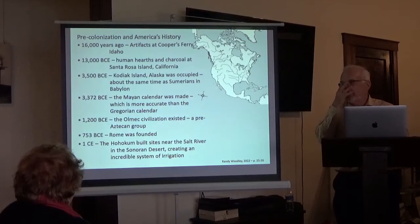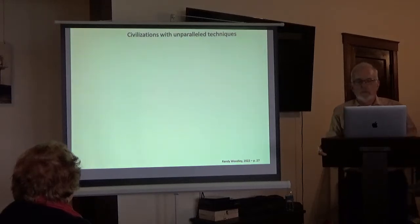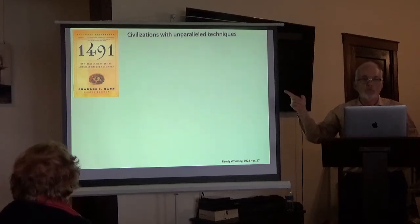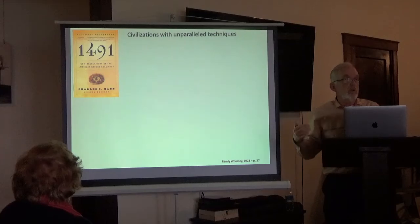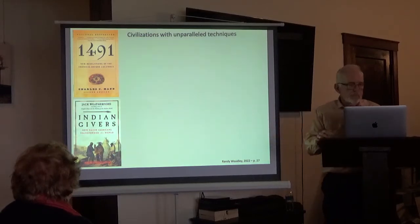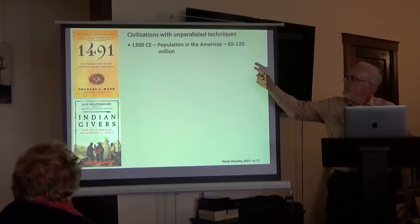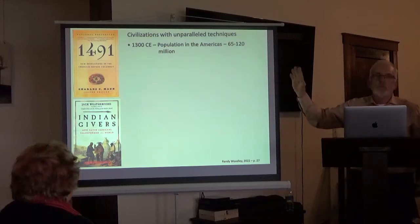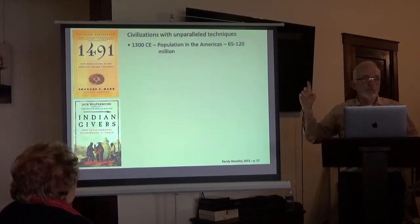In the year 1 CE, there were already amazing irrigation systems in the southwest that irrigated crops and fed thousands of people. There were lots of important technical developments that happened in the Americas as well. If you want to read a book about this, read '1491' by Charles Mann — get it on audible if you like. He goes through all these things about North and South America that we probably don't know about. Another one is by Jack Weatherford: 'Indian Givers: How Native Americans Transformed the World.' Before Europeans came, there were somewhere between 65 and 120 million people in the Americas.